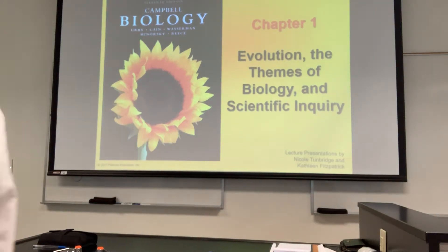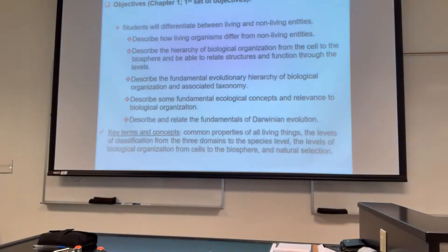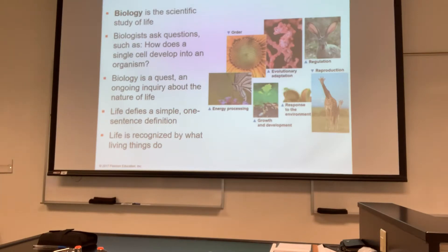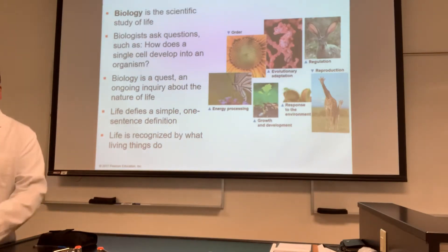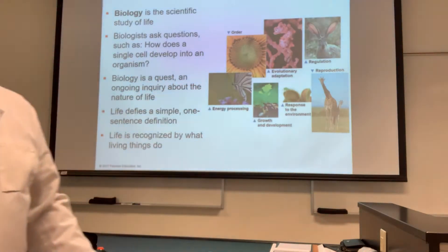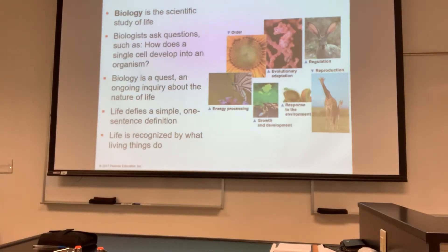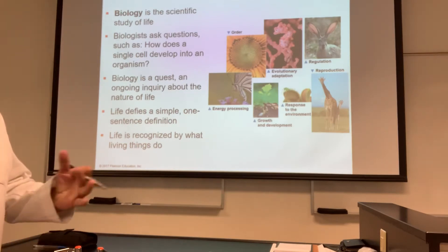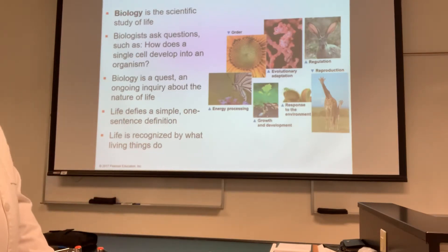In chapter one, we started talking — chapter one is almost like a summary, an introduction of what's to come. We did start talking about the criteria of life: all living organisms must be able to reproduce, respond to the environment, regulate, undergo evolutionary adaptation — because they all have DNA — have order, process energy, and undergo growth and development.